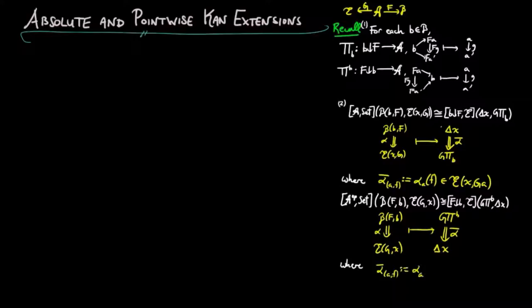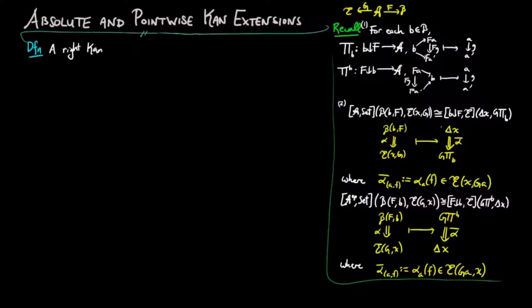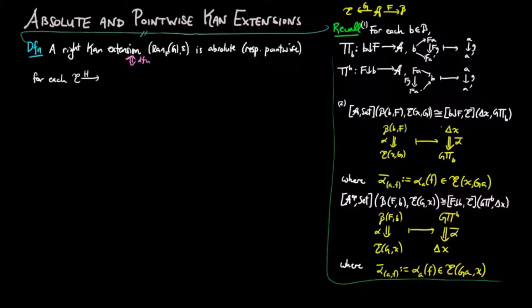We make the following definition. A right Kan extension of g along f is called absolute, respectively point-wise, if and only if each functor h, respectively each representable pre-sheaf, preserves the right Kan extension.